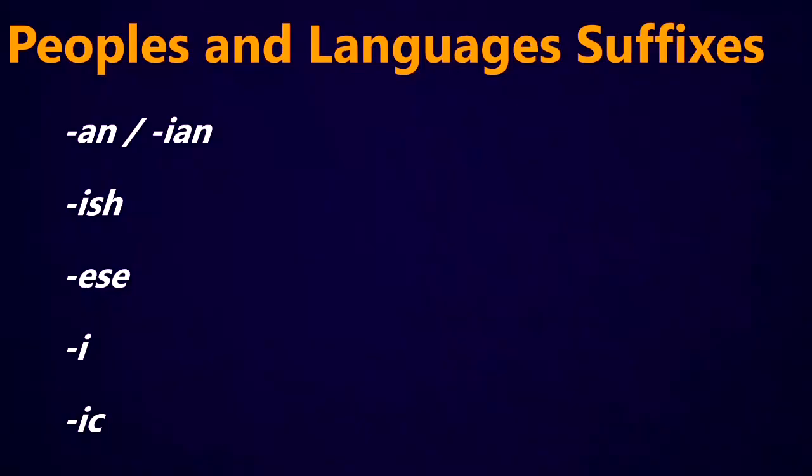When we're naming peoples and languages in English, we tend to use some common suffixes. Those are the AN or IAN suffix, the ISH suffix, the ESE suffix, the I or E suffix, and IC.